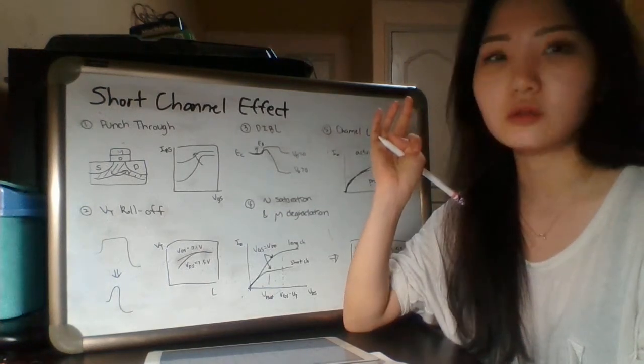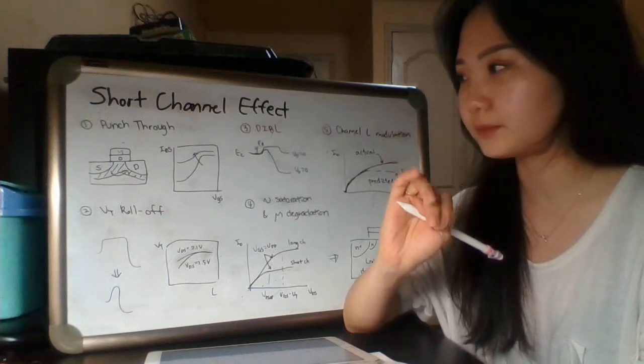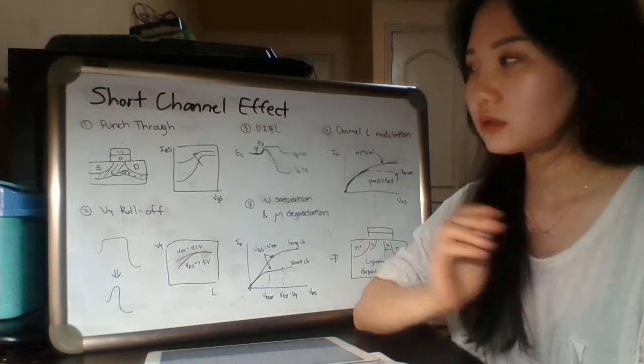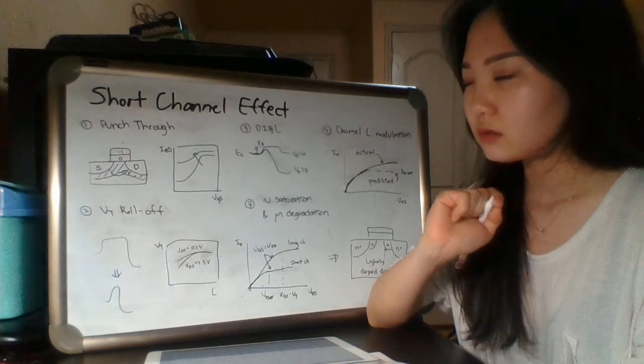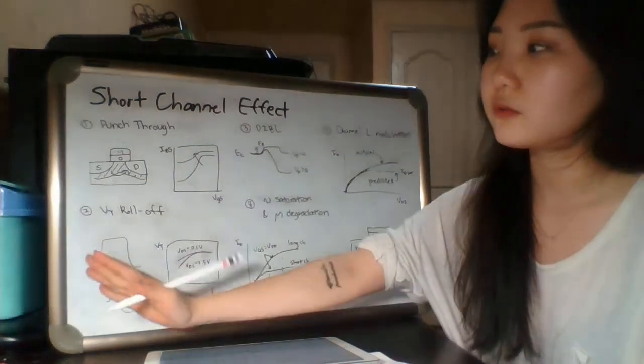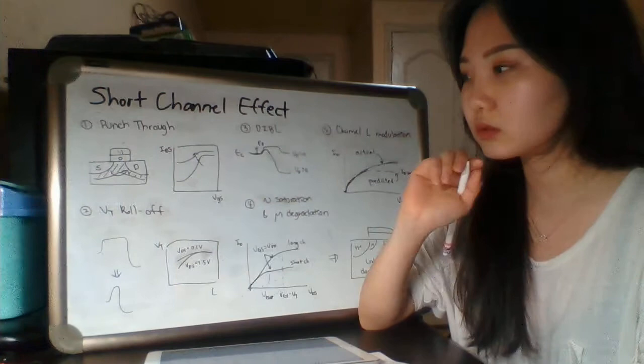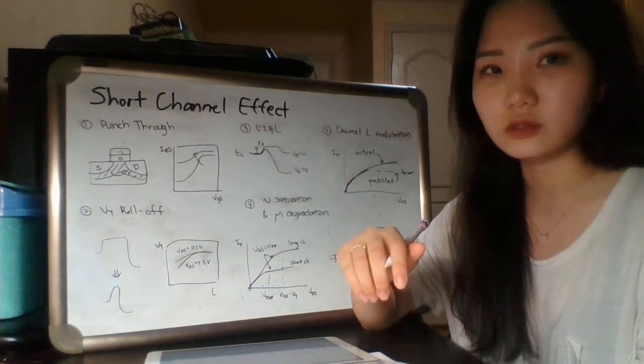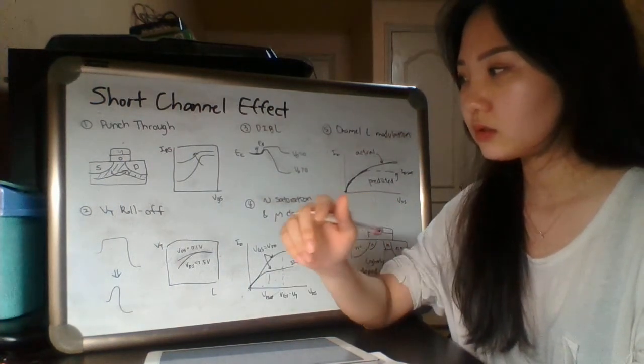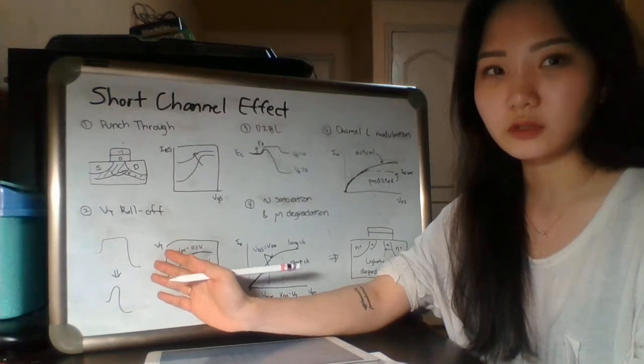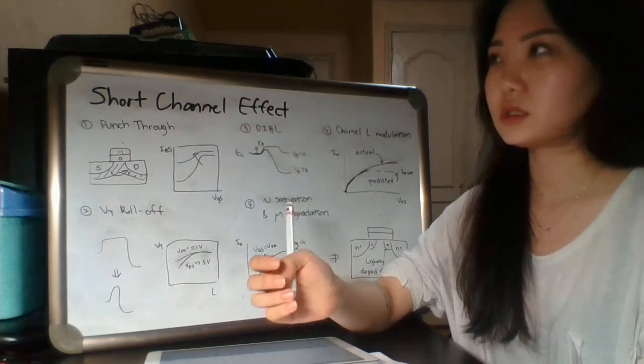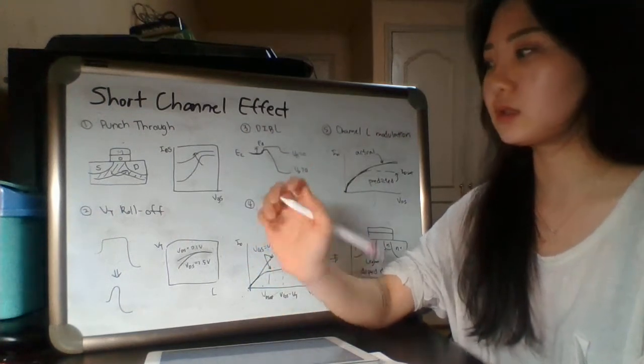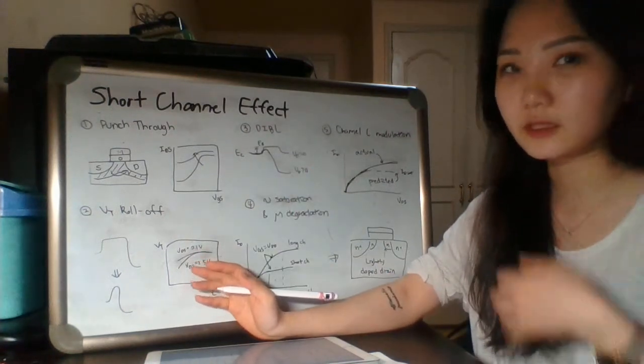Second is VT roll-off. The source-to-channel barrier gets lower in short channels, which decreases the threshold voltage. This effect is more pronounced at higher drain voltage VDS.